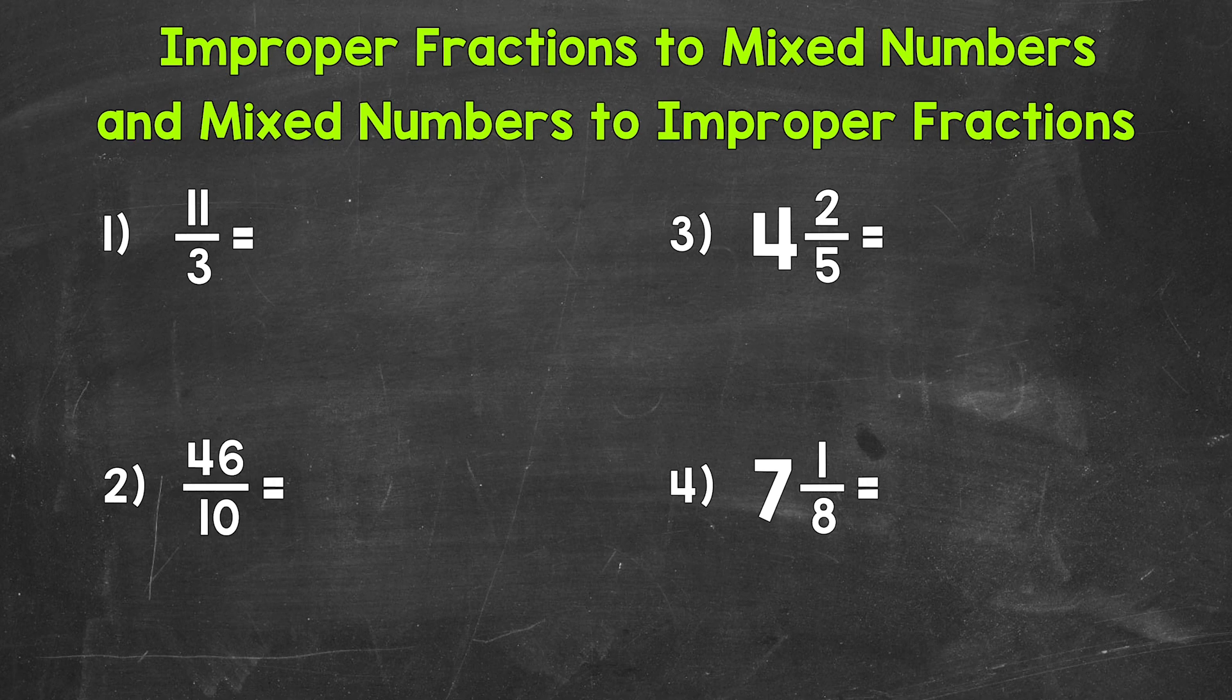Let's change this to a mixed number. We do this by dividing. We divide the numerator by the denominator. So 11 divided by 3. Now once you have this down, you'll be able to do it without writing it out. But for this one, let me write out the problem. So we have 11 divided by 3.